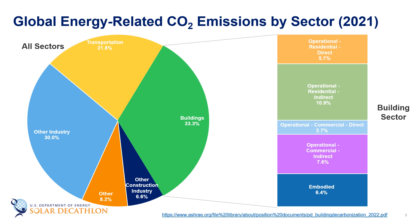Even as we move to electrify our buildings and replace fossil fuel burning systems with electric heat pumps, we still have these indirect emissions if our electricity is being generated using fossil fuels. If we want to further reduce the emissions related to the building sector, we also need buildings to use electricity generated from carbon-free sources.